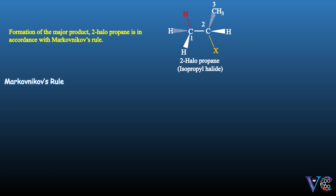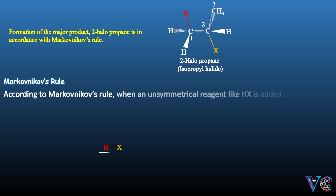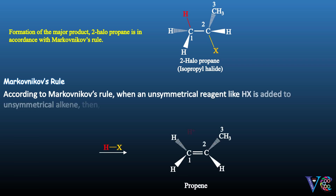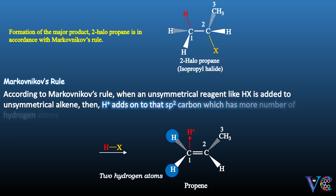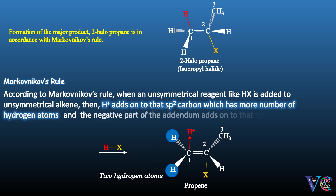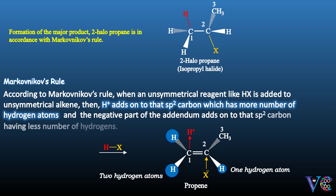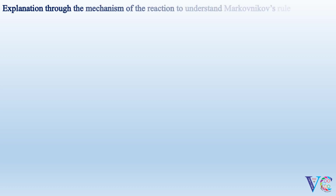According to Markovnikov's rule, when an unsymmetrical reagent like H-X is added to an unsymmetrical alkene, H-plus adds on to that sp2 carbon which has the greater number of hydrogen atoms, and the negative part of the addendum adds on to that sp2 carbon having fewer hydrogens. This is explained through the mechanism of the reaction.